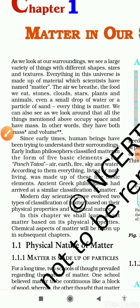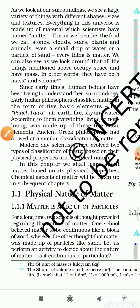Now in the second paragraph, they explain that since early times human beings have been trying to understand their surroundings. Early Indian philosophers classified matter in the forms of five basic elements, named the panch tattwa — that is air, earth, fire, sky and water.